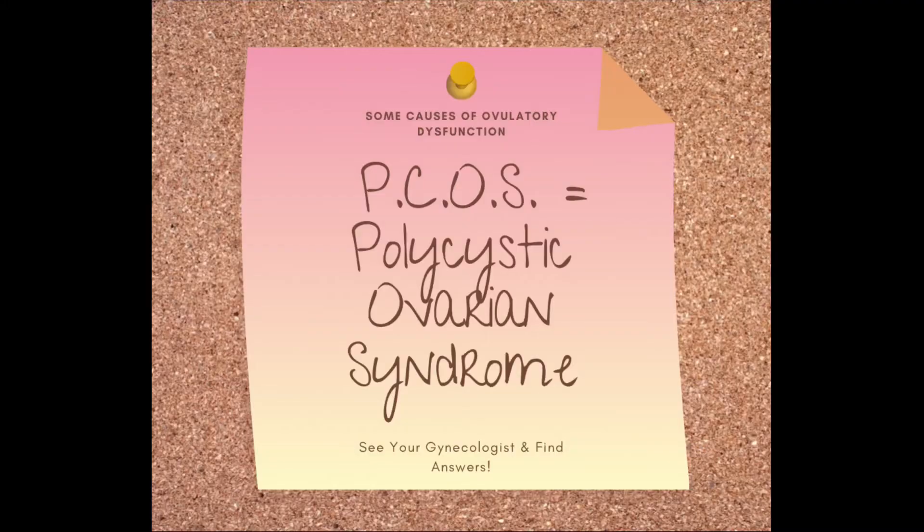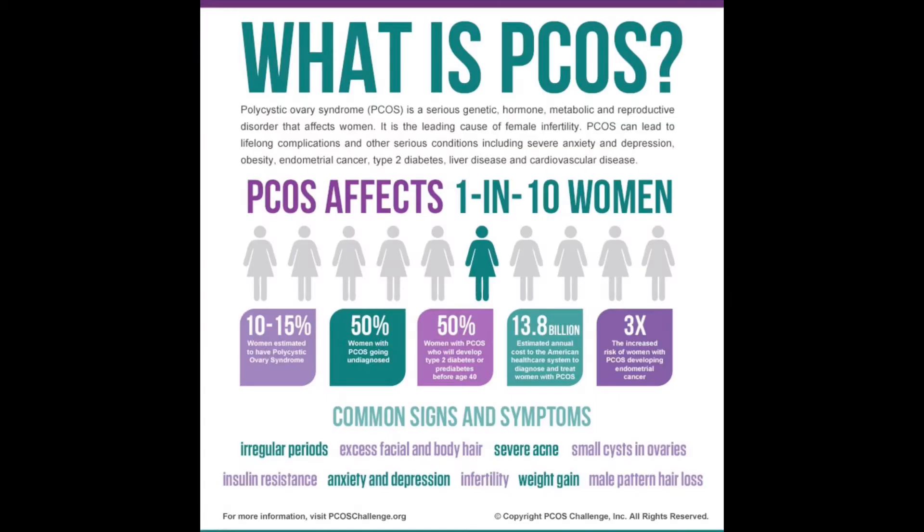It is very common to see really irregular hormonal function in women who are younger and just starting out, before they really reach that good hormonal mixture that we have as adult women. Ovulatory dysfunction can also occur in polycystic ovarian syndrome, and that is probably the most common cause of ovulatory dysfunction in the United States.